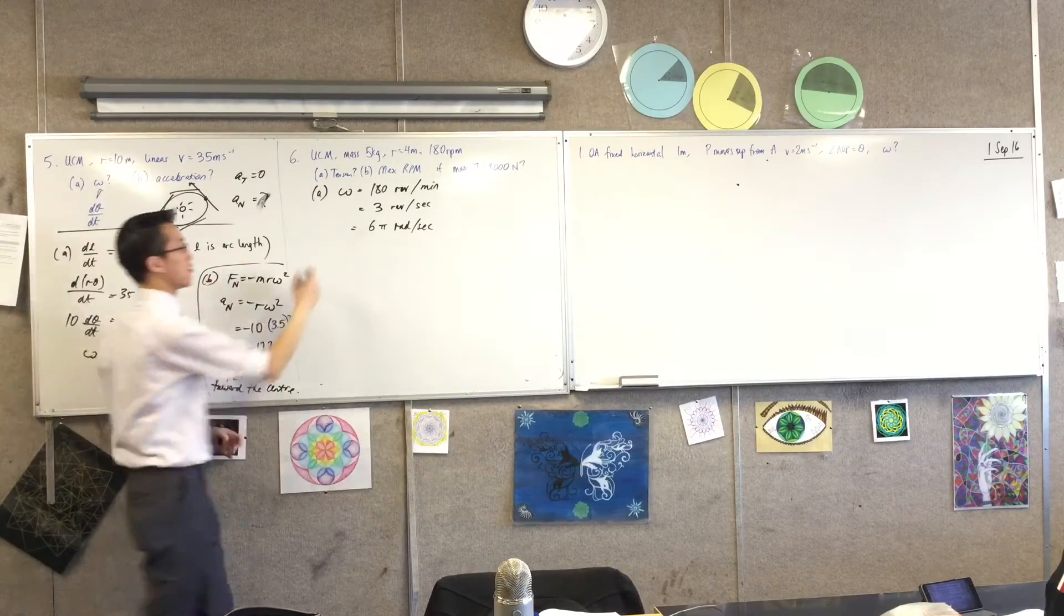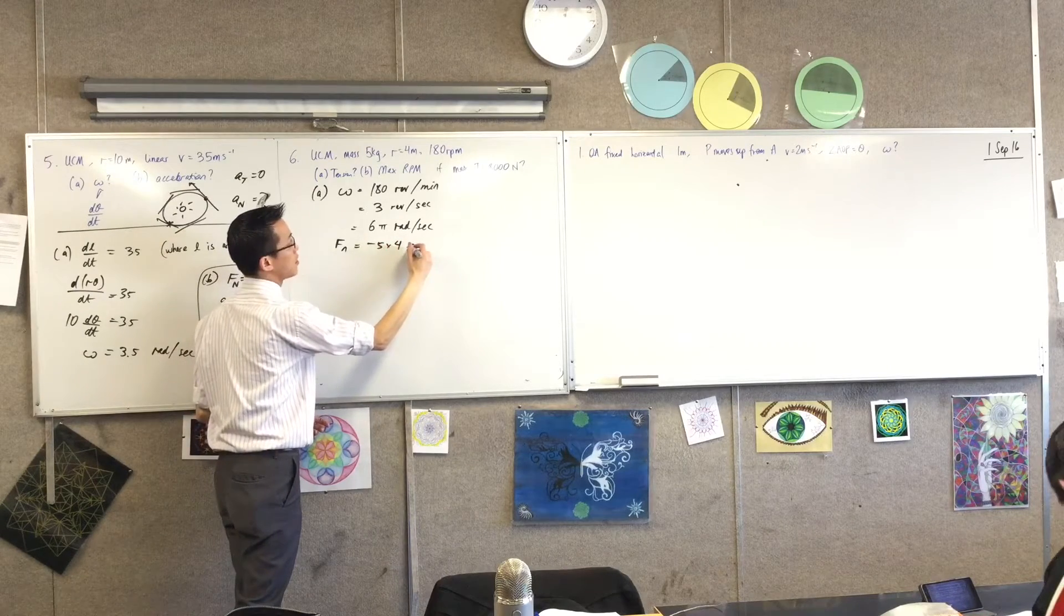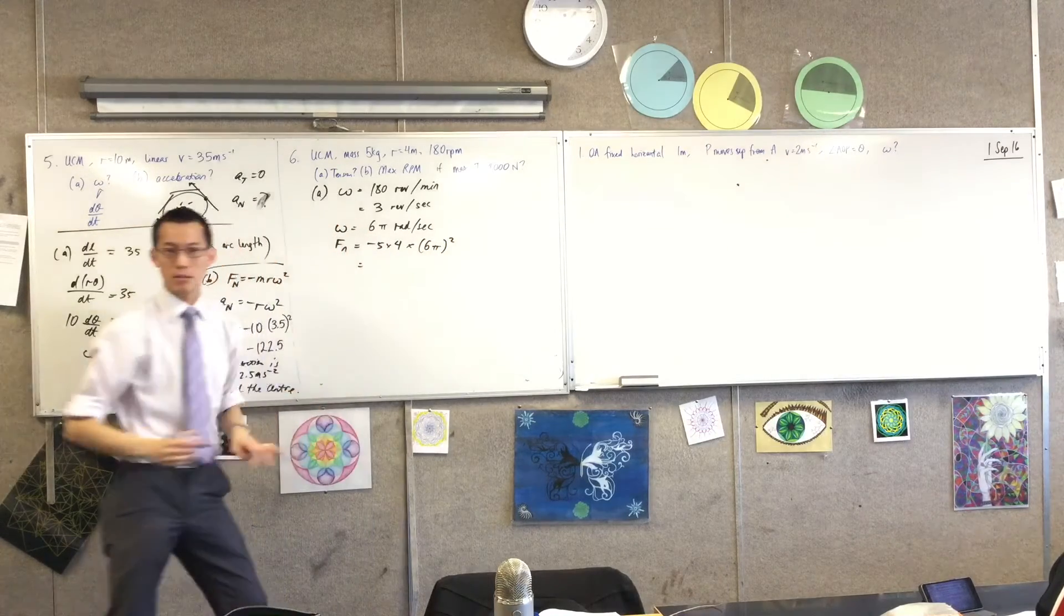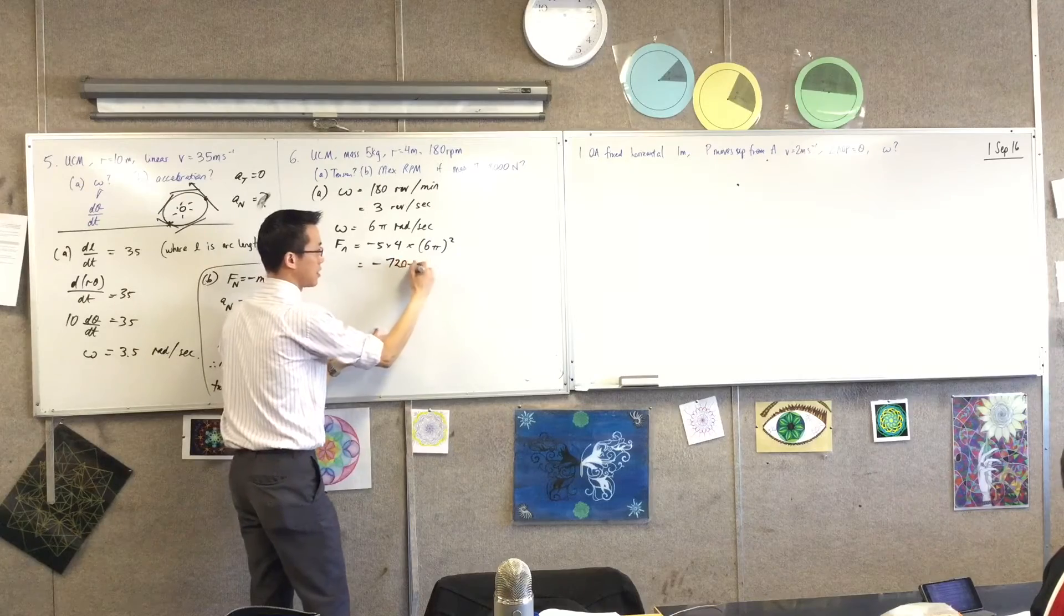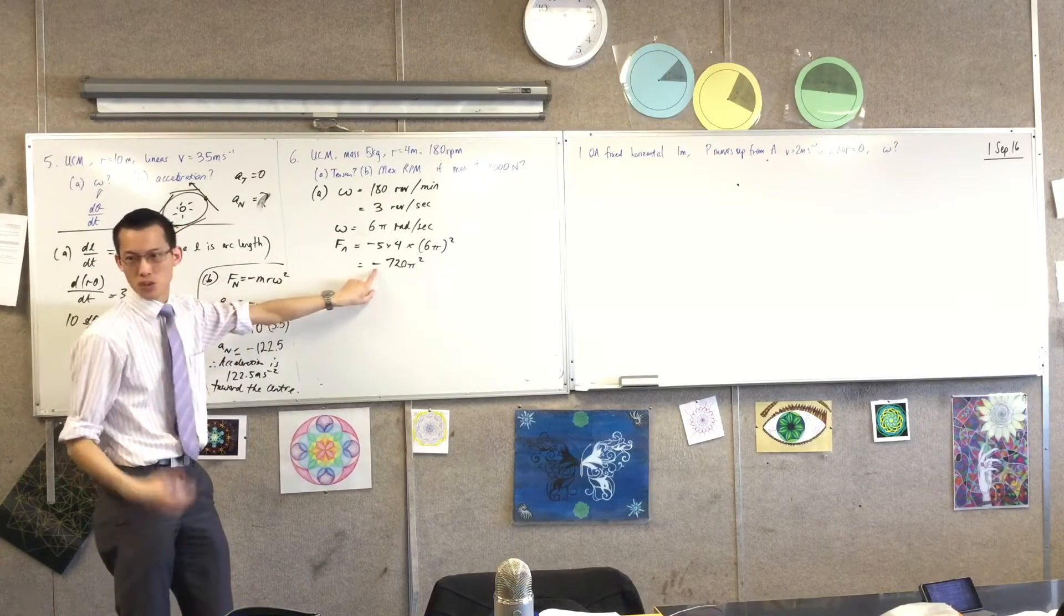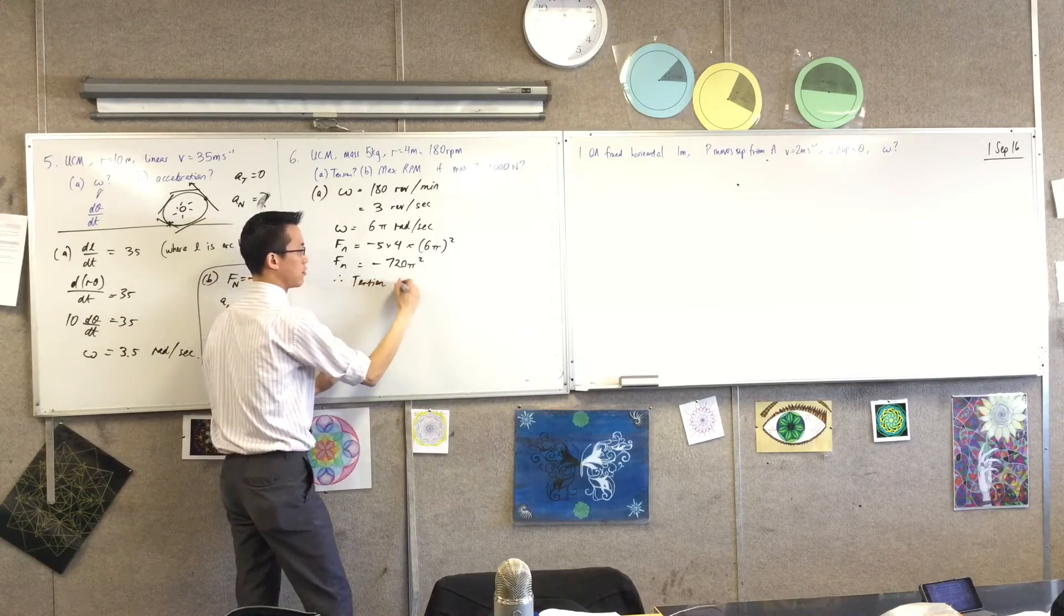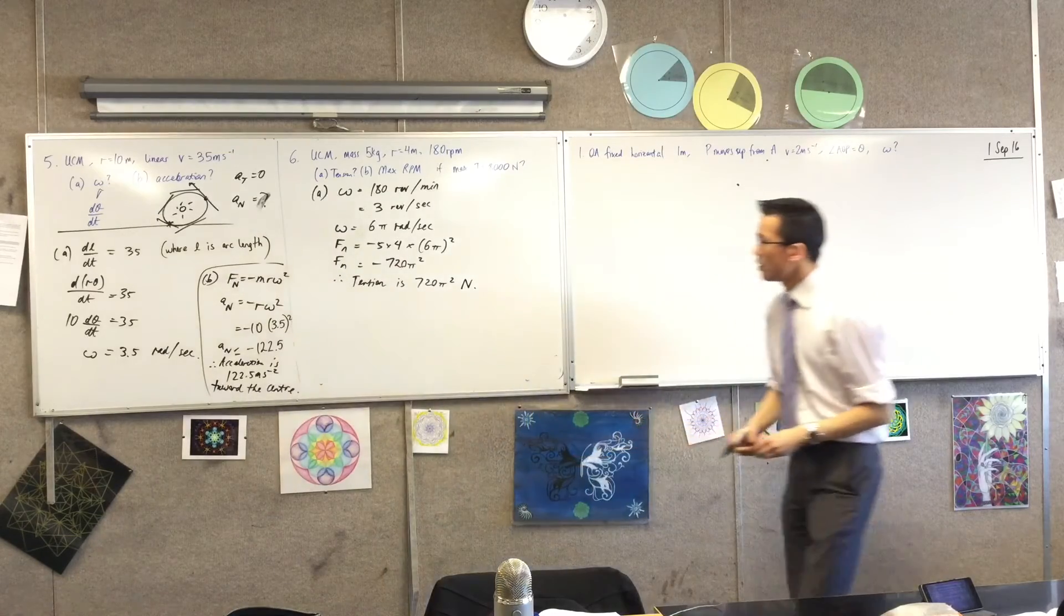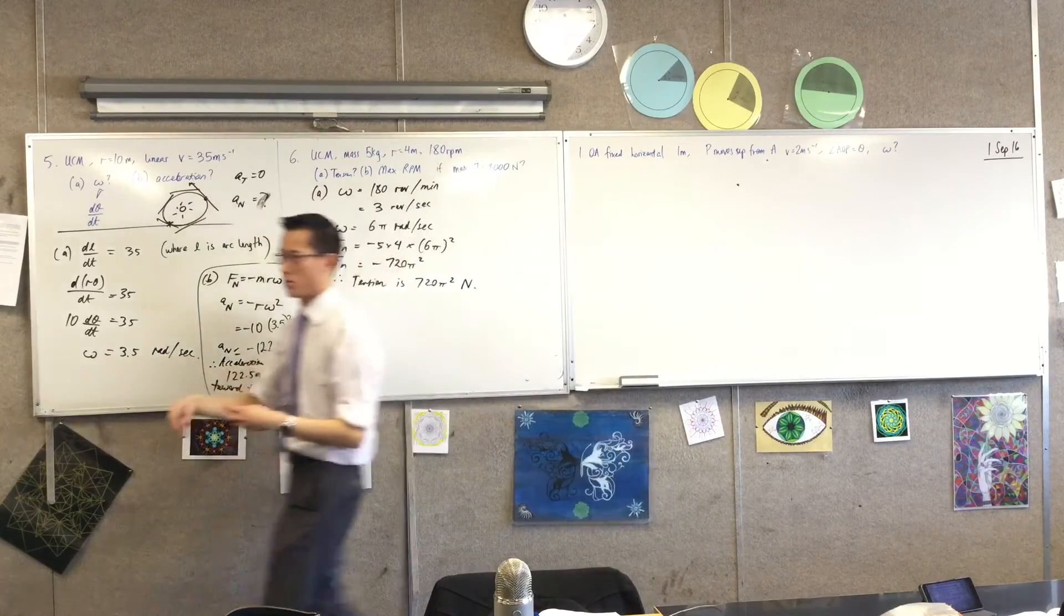So now I just need to substitute it. The normal force is going to be negative five times four times omega squared. So this is six pi squared. What's this? This is 20. That's 36. That's negative 720 pi squared. Now because they've said tension, that kind of takes care of the fact of which direction it's going in. So all I would do from this, which tells me more than what they're asking for, is just tell them the magnitude. The tension is 720 pi squared newtons. Very good, because it's a force.